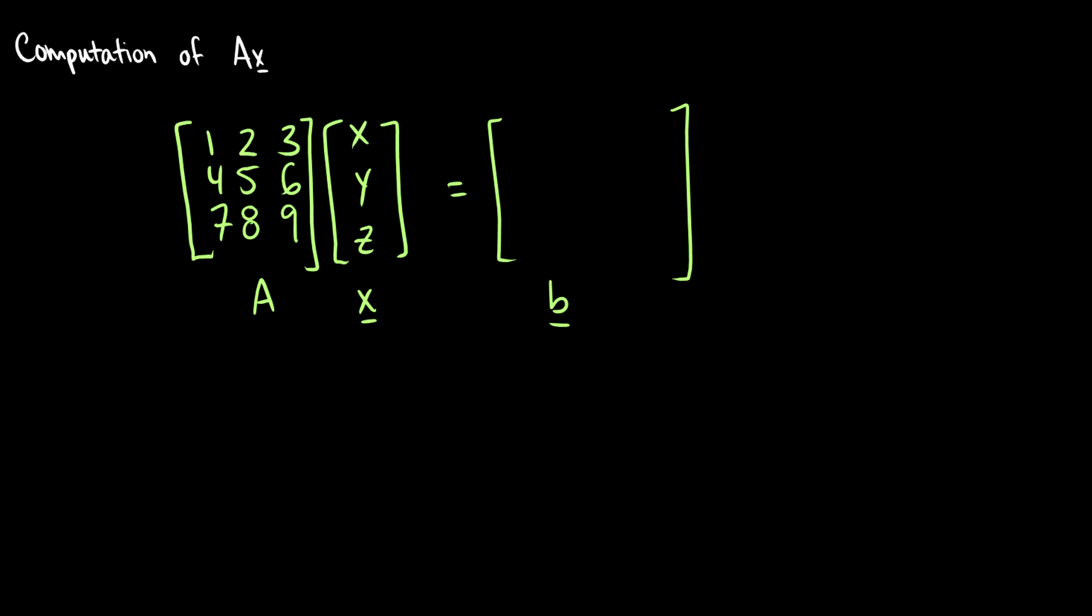In this video we're going to practice the computation of a matrix times a vector and look at identity matrices. Here's how we multiply a matrix times a vector using something called the dot product. I alluded to this in the last video.